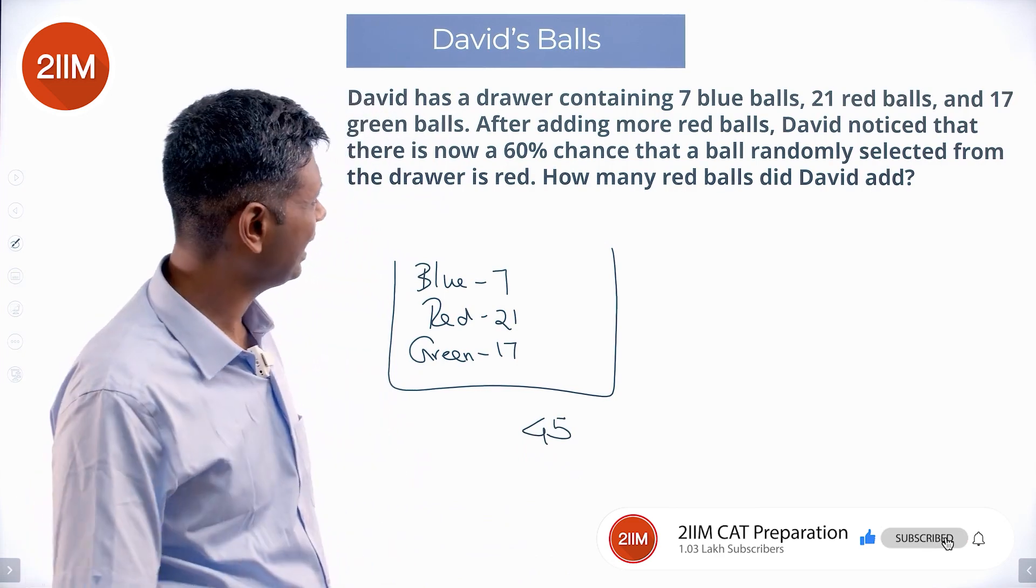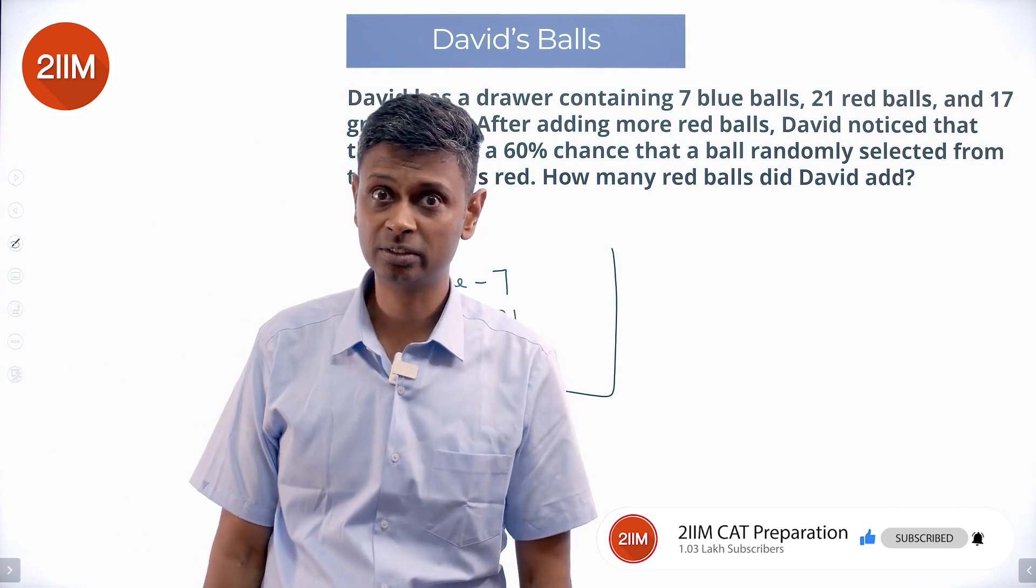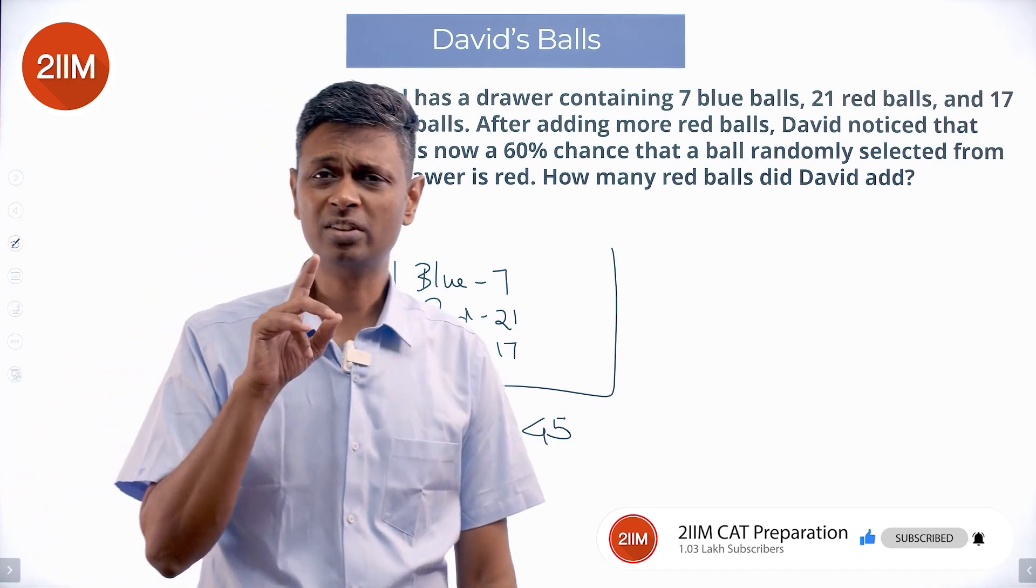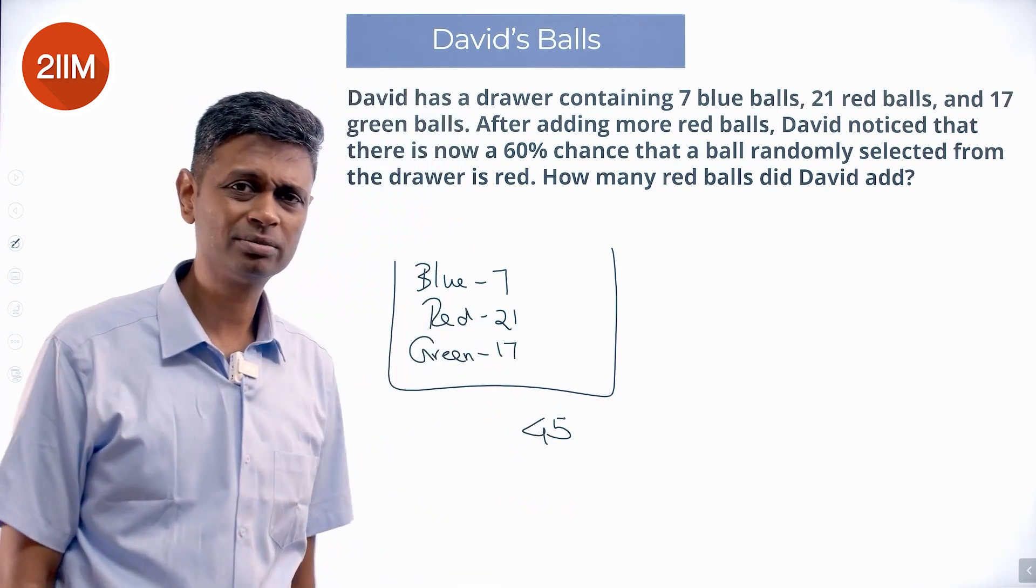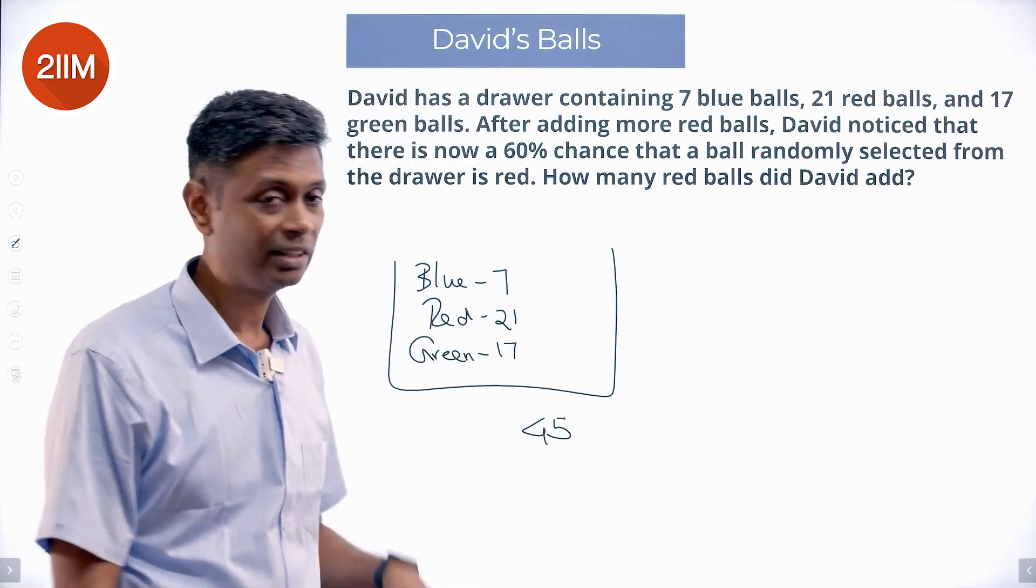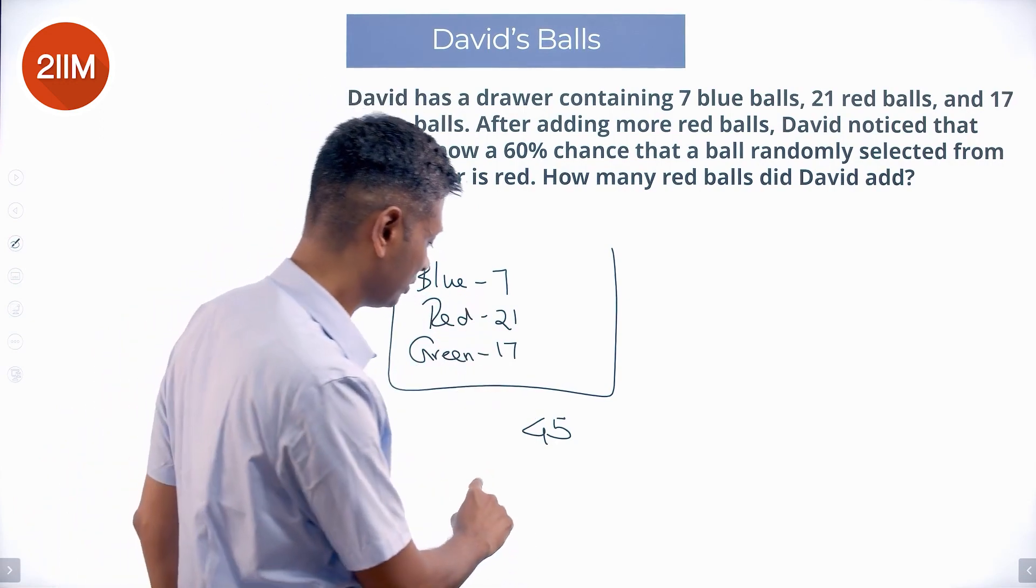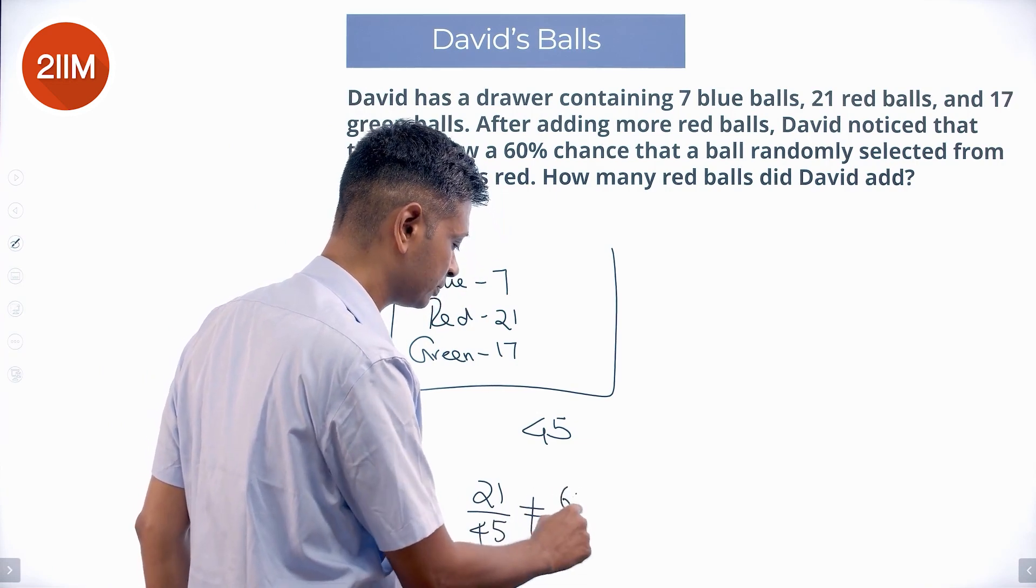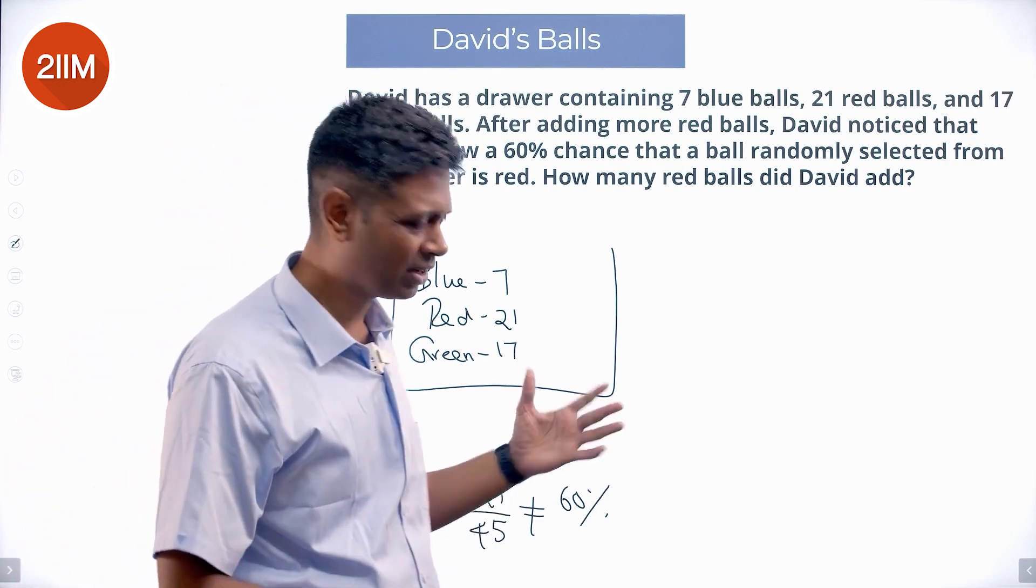I am saying removing a ball randomly from this set, 60% chance that it will be red. If I removed randomly from here, there will not be a 60% chance that it is red. Why? 45 out of 45, 21 red balls. It is basically saying the proportion of red balls inside is 60%. 21 by 45 is not 60%. 21 by 45 is less than half. Half is 50%.